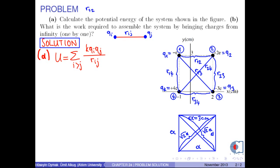Thus, r12, r23, r34, and r14 are a, and r13 and r24 are square root of 2a.